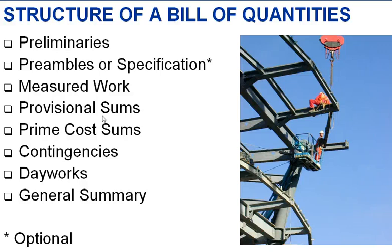Then we have contingencies, which is the sum of money set aside for additional works which are envisaged but which have not yet been agreed on. Following on from that, we would have a schedule of day works, which allows the client to see the rates that will be charged for items outside of the contract works — so that would allow us to price for labour items, plant items, and any other aspects of day works. Then at the end we would have a general summary which outlines the overall cost centres of the project.